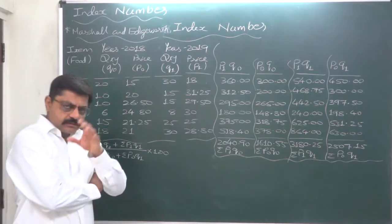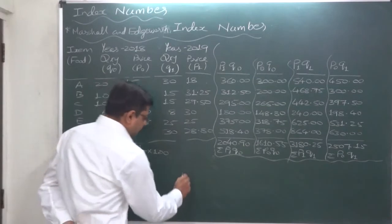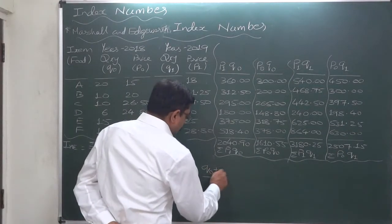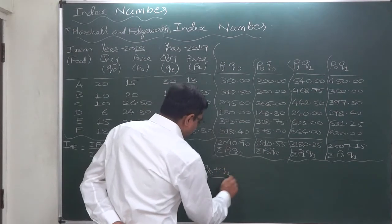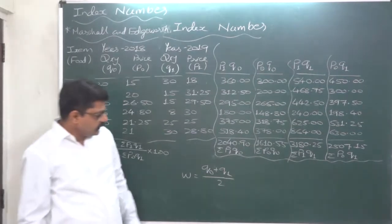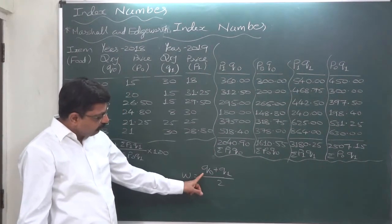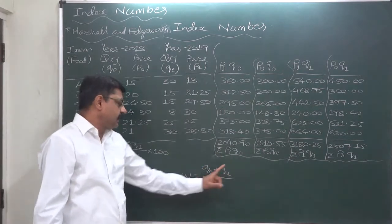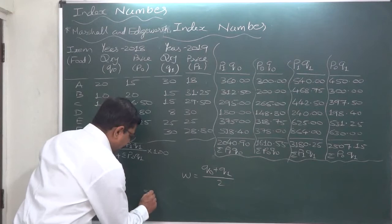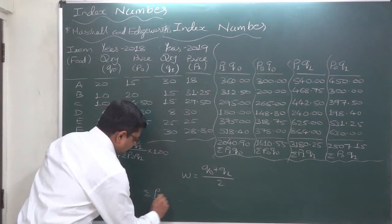Marshall and Hoverty actually suggested that at the time of constructing index number we should consider the simple arithmetic mean of quantity of base year and current year as weight. So in that case, it is something like this.